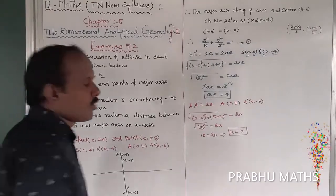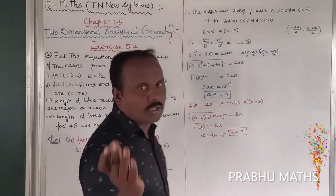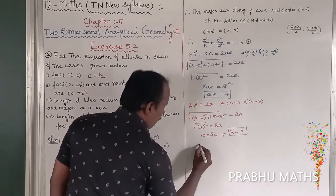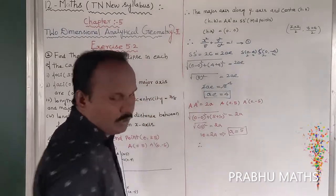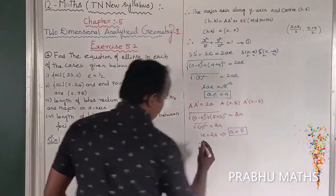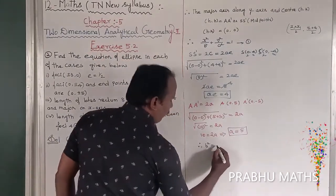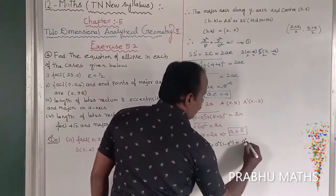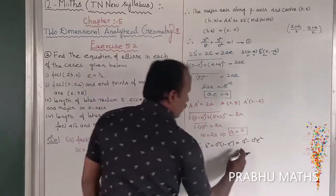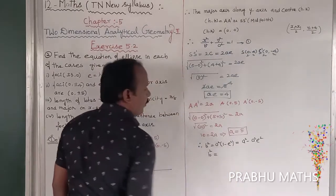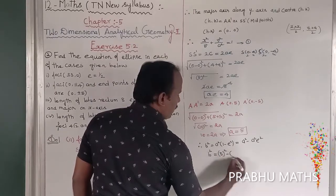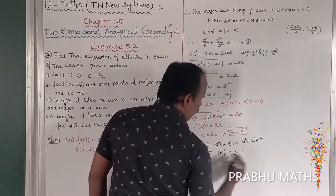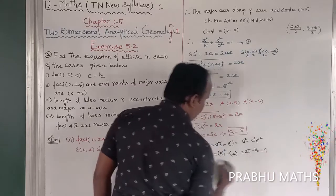Now a equals 5, and ae equals 4. So b² equals a²(1 - e²), that is b² equals a² minus (ae)². Therefore b² equals 5² minus 4² equals 25 minus 16 equals 9. So b² equals 9.